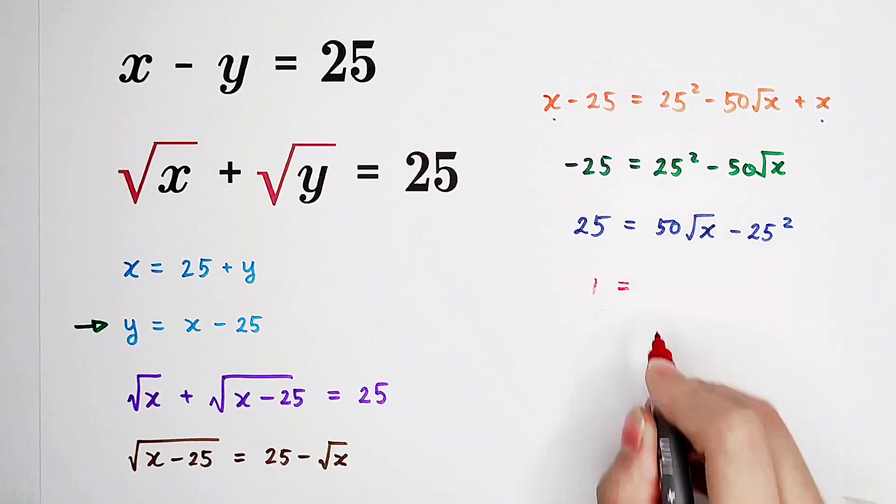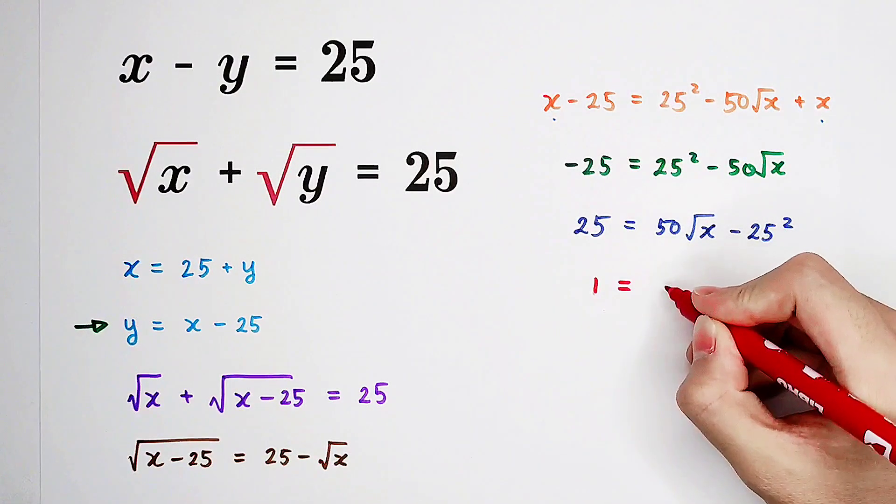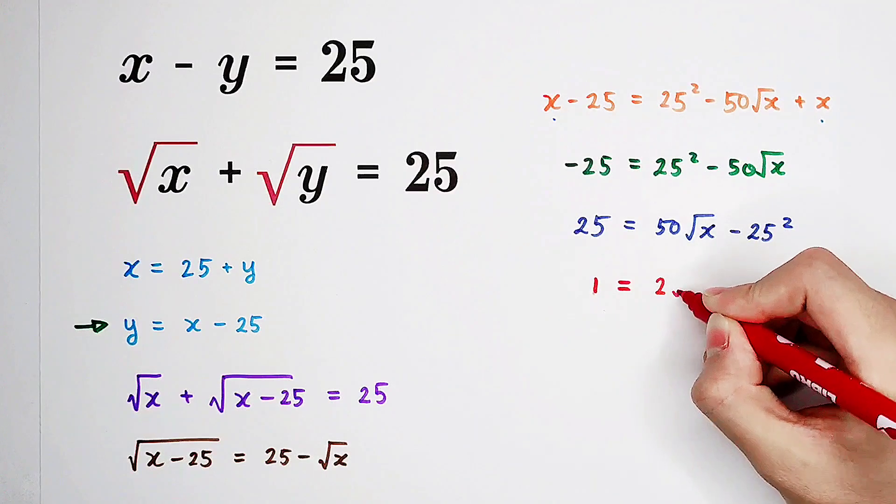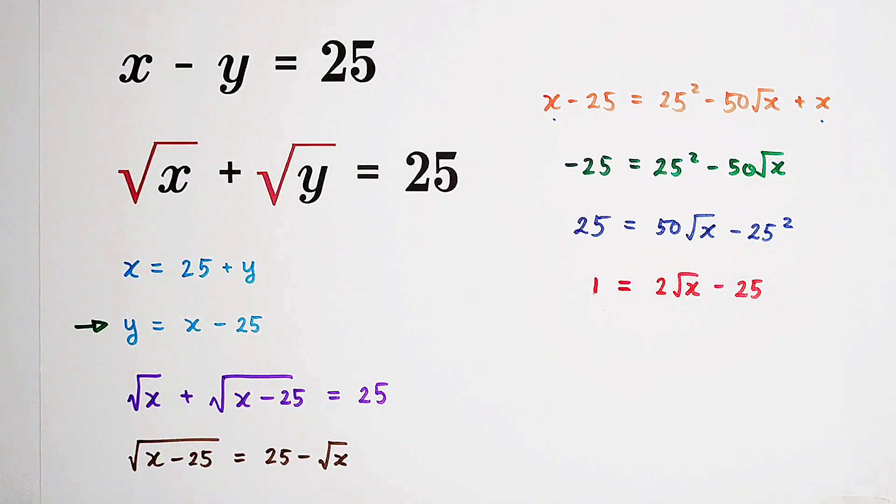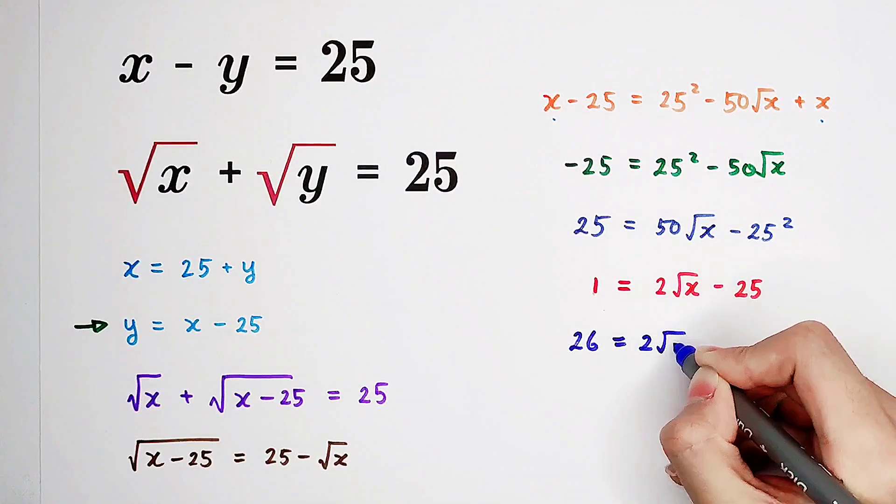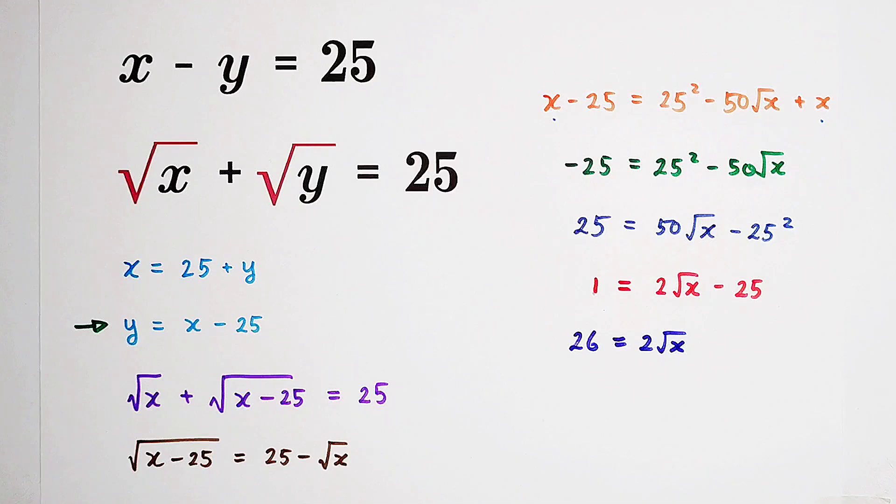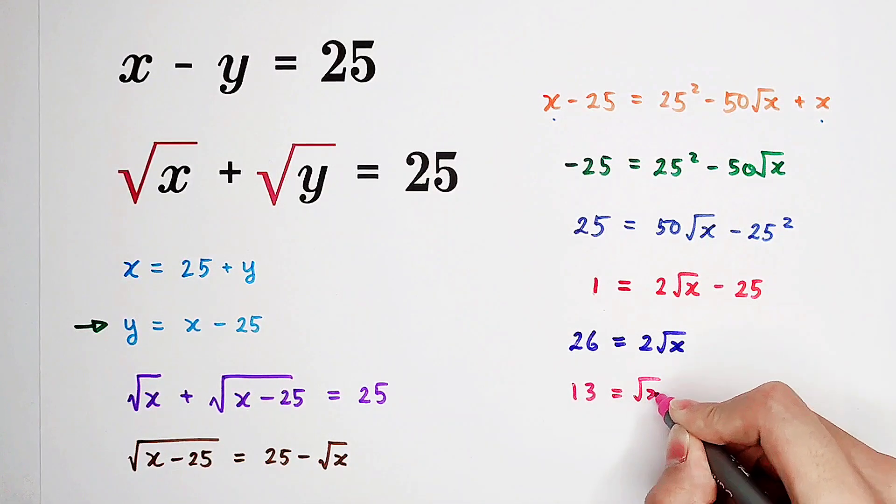1 is equal to 2 times square root of x minus 25. Add 25 to both sides, 26 is 2 times square root of x. 13 is square root of x.